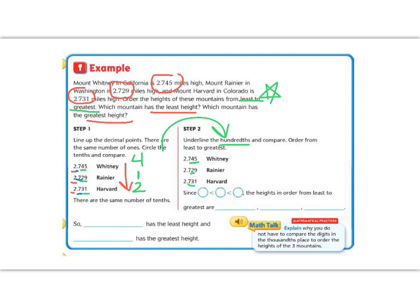So since 2 is smaller than 3, and 3 is smaller than 4, we can compare these numbers in this order. The smallest one is Rainier at 2.729. The next largest is Harvard at 2.731. And the tallest of these three is Whitney at 2.745. So the mountain with the least height is Rainier, and the mountain with the greatest height is Whitney.